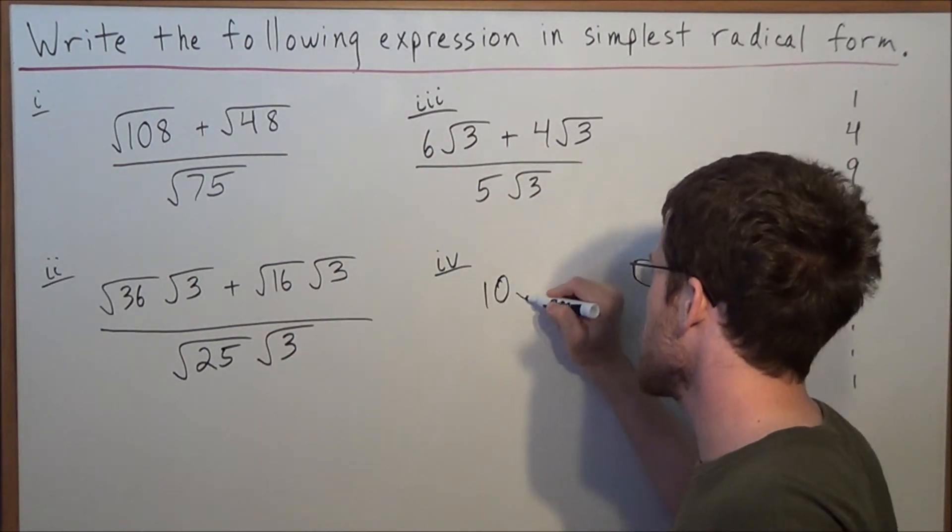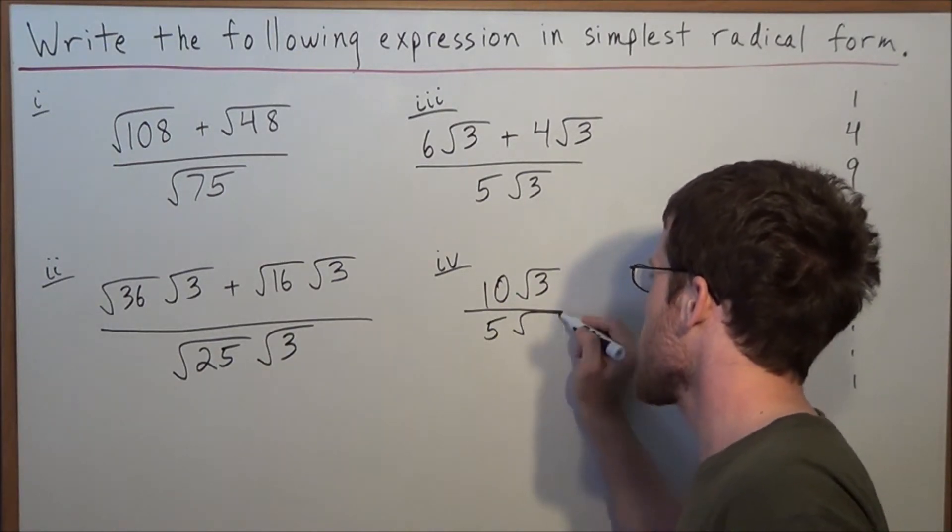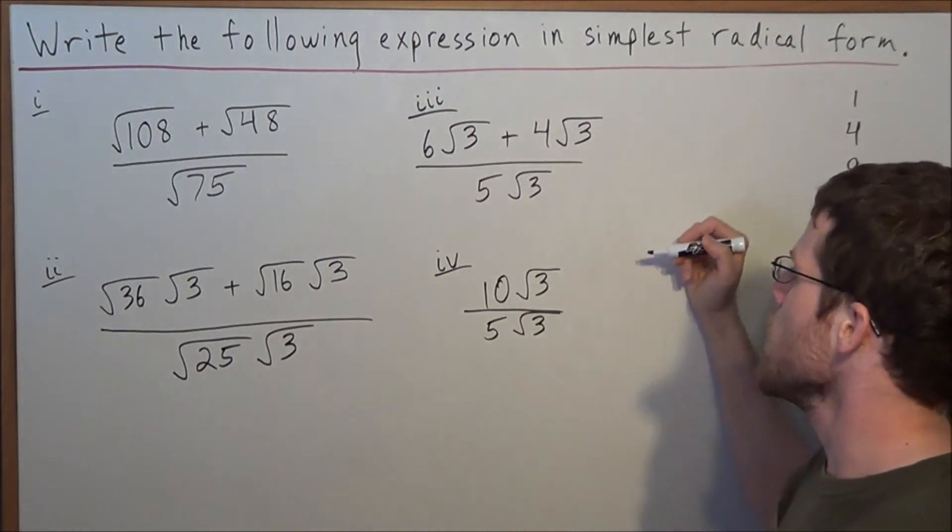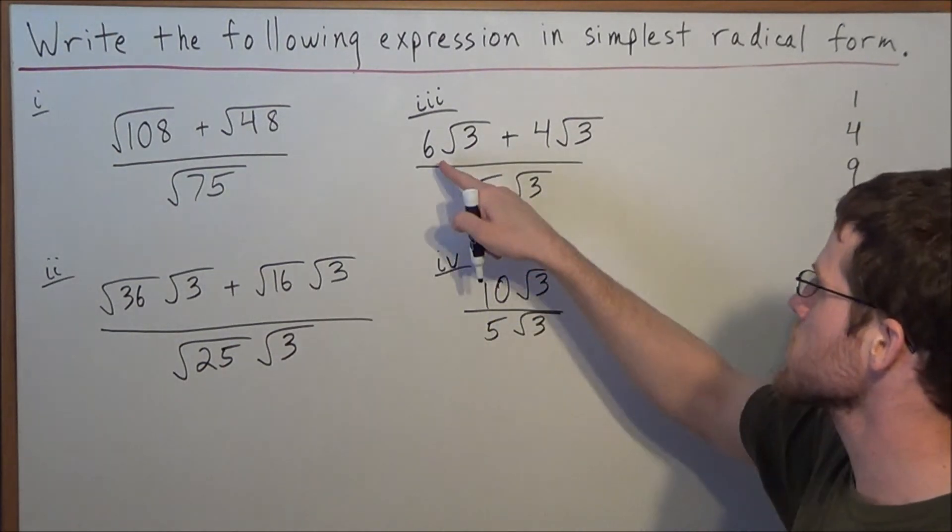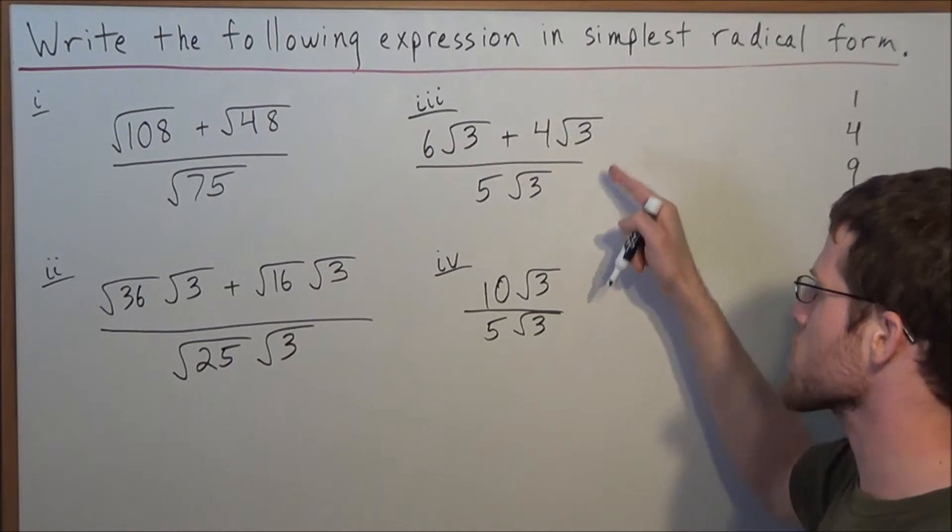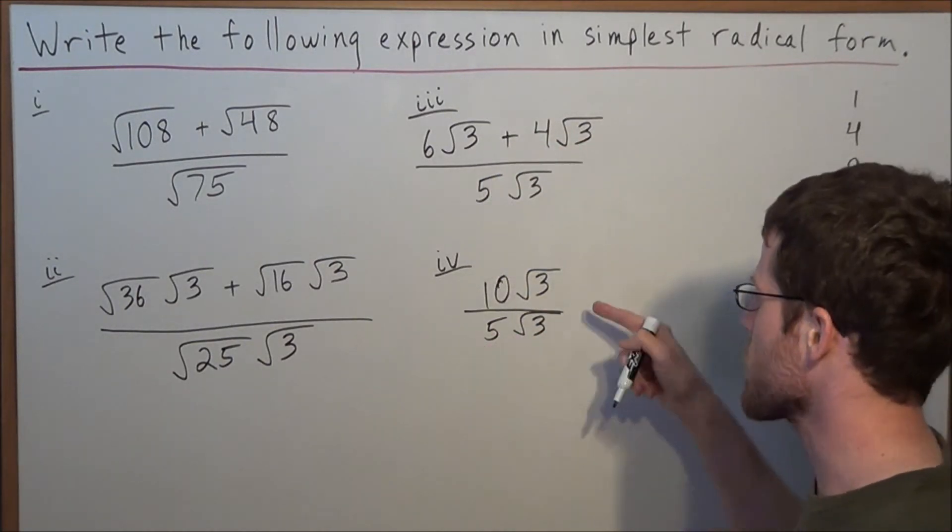So we have 10 radical 3 divided by 5 radical 3. In a previous video, I go into more detail about why we do this, but think of this as 6x plus 4x would be 10x. We're not going to add the 3's under the radical. We have to keep them the same.